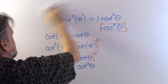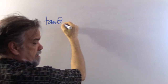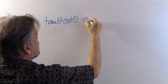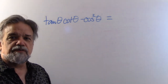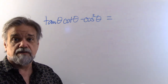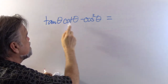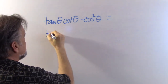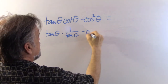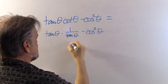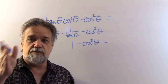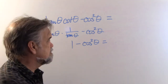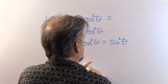Number three: tangent of theta times cotangent of theta minus cosine squared of theta. Since tangent and cotangent are reciprocals, tangent times one over tangent equals one. So this becomes one minus cosine squared of theta. From the Pythagorean identity, sine squared plus cosine squared equals one, meaning sine squared equals one minus cosine squared. The answer is sine squared of theta.